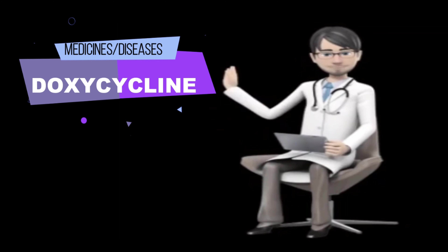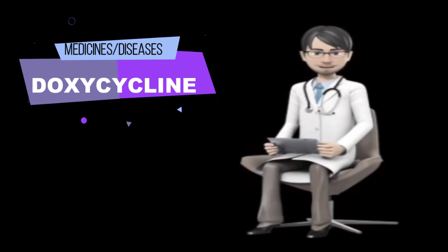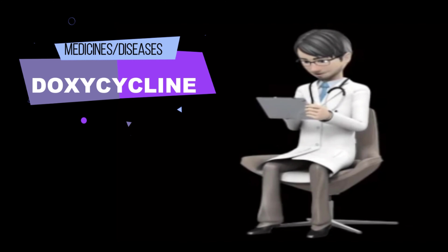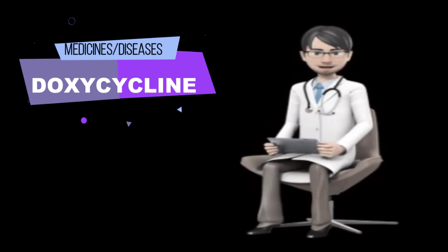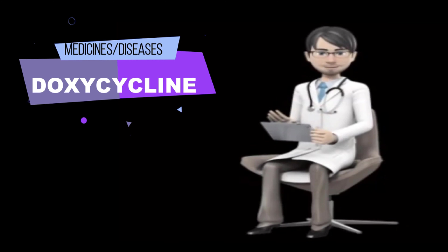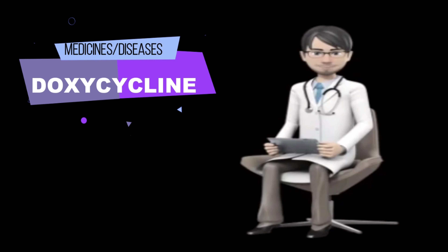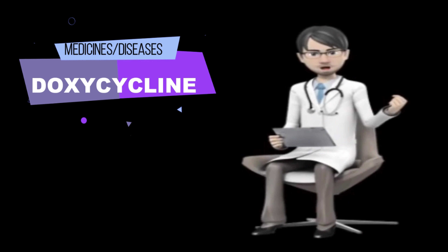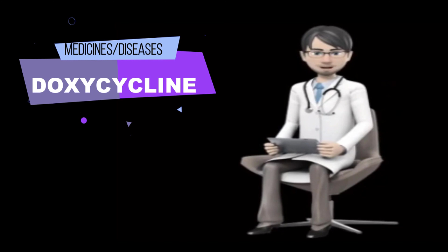How should I take doxycycline? Take this antibiotic exactly as prescribed by your doctor. Follow all directions on your prescription label. Do not take this medicine in larger or smaller amounts or for longer than recommended. Take tablets or capsules with a full glass of water. Drink plenty of liquids while you are taking this medicine. Most brands of this medicine may be taken with food or milk if they upset your stomach. Different brands of doxycycline may have different instructions about taking them with or without food. Take Oracea brand on an empty stomach, at least one hour before or two hours after a meal.